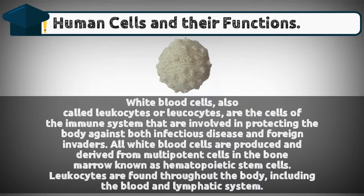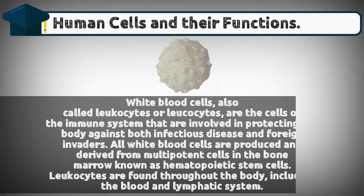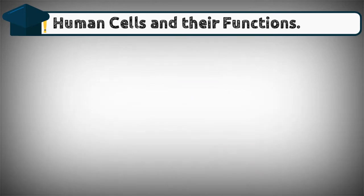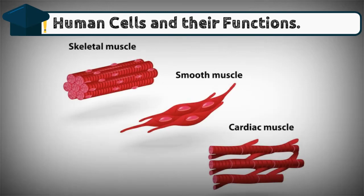White blood cells, also called leukocytes, are the cells of the immune system involved in protecting the body against both infectious disease and foreign invaders. All white blood cells are produced and derived from multipotent cells in the bone marrow known as hematopoietic stem cells. Leukocytes are found throughout the body, including the blood and lymphatic system.